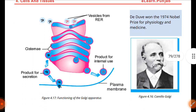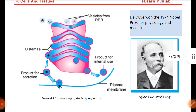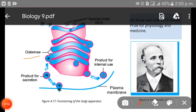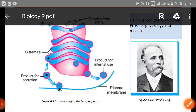As you can see in the diagram, we have the Golgi apparatus. There are cisternae, products for secretions, products for internal use, and vesicles from the endoplasmic reticulum. That covers the Golgi apparatus.